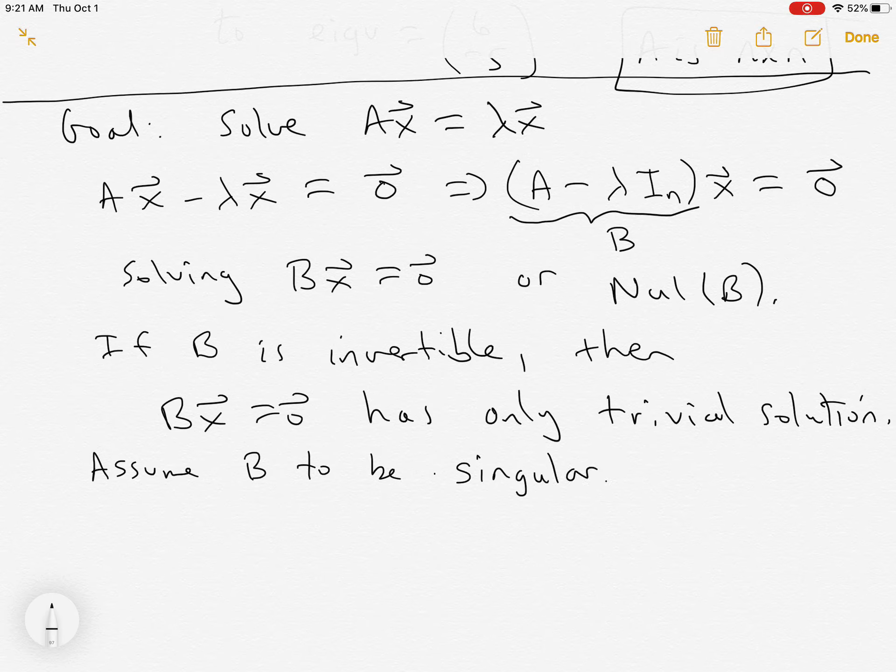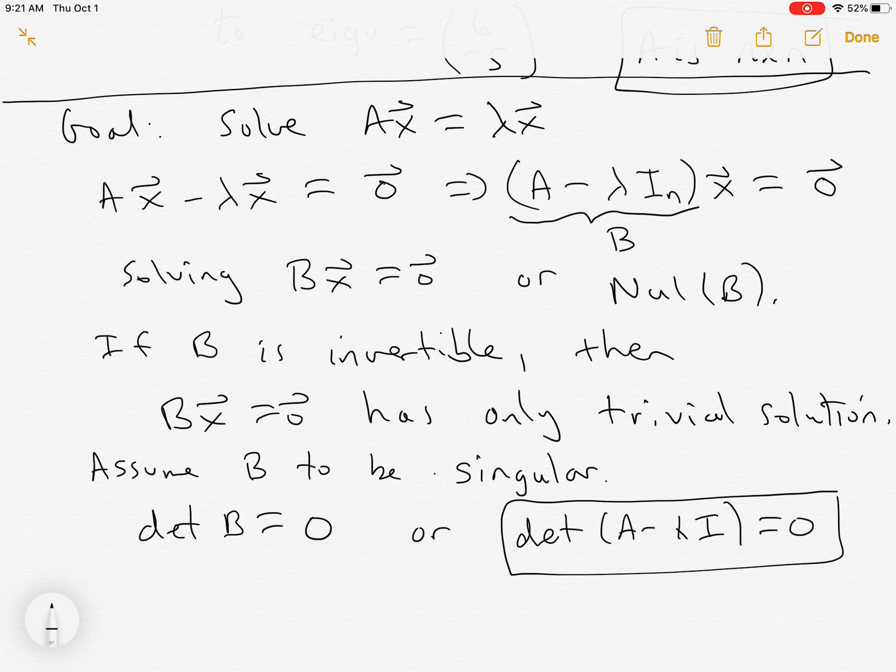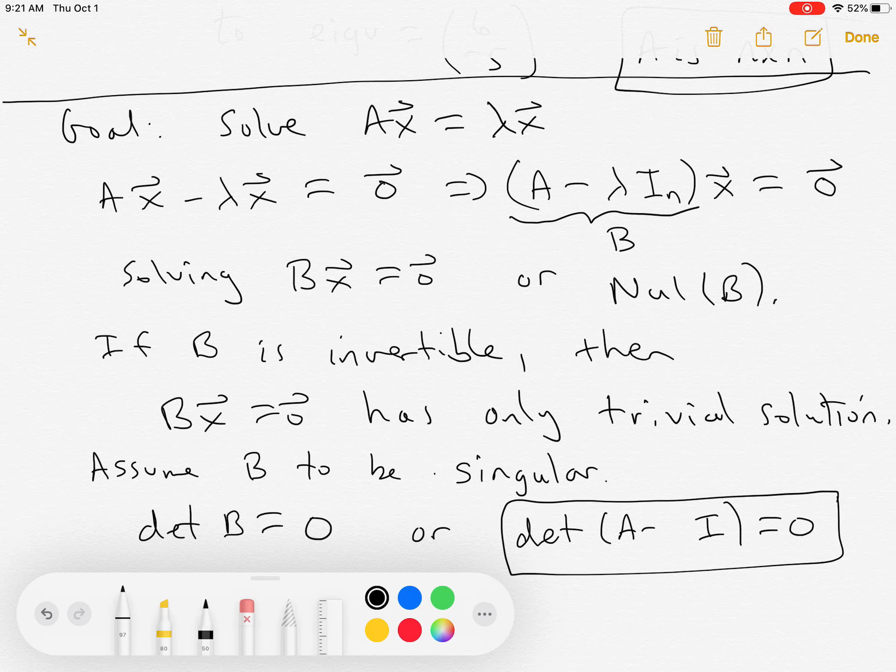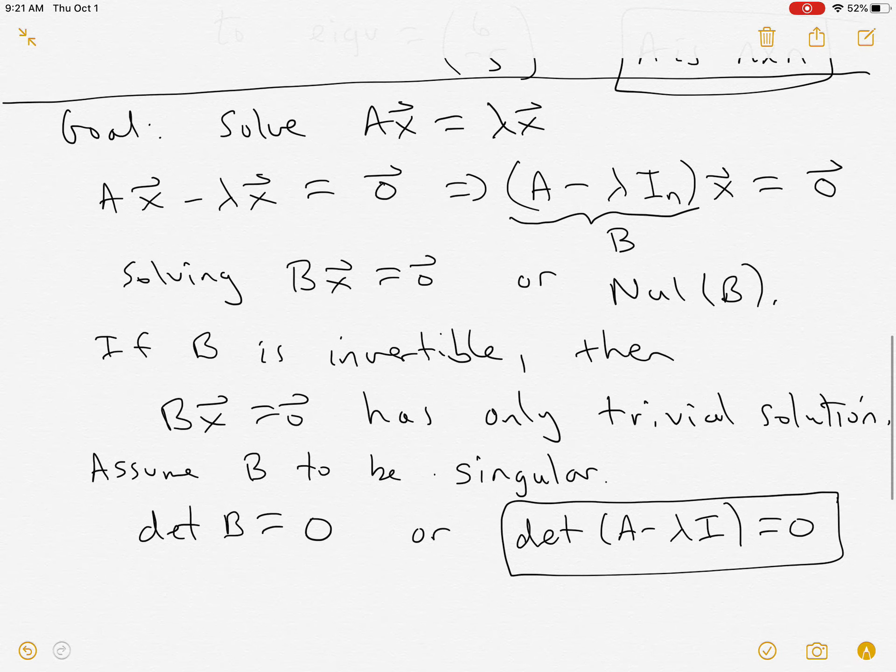And the determinant of a singular matrix, in this case B, is zero, or in other words, the determinant of (A - λI) is zero. And this will give us non-zero solutions once we find out, once we find lambdas to make this thing, the determinant of zero.